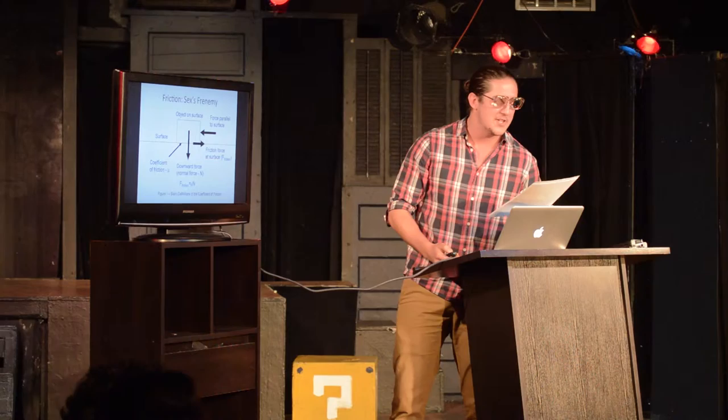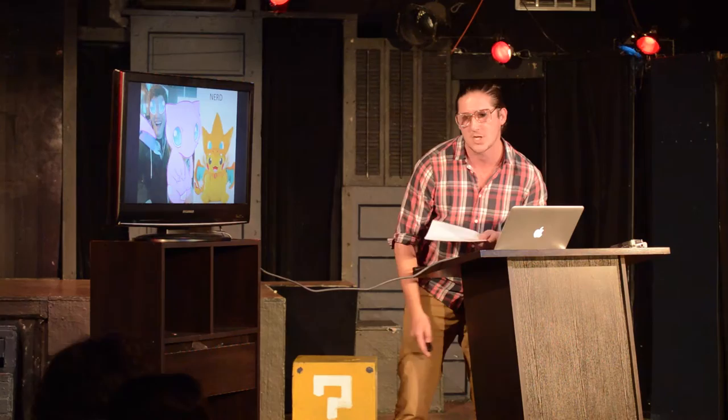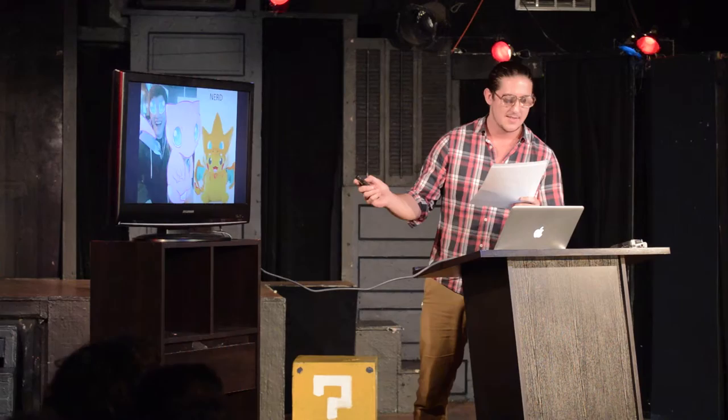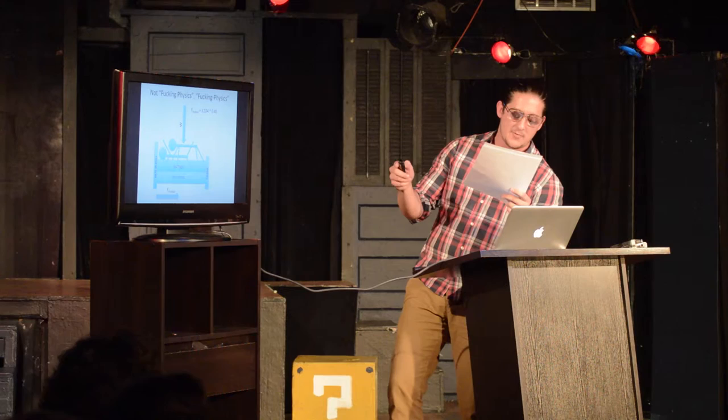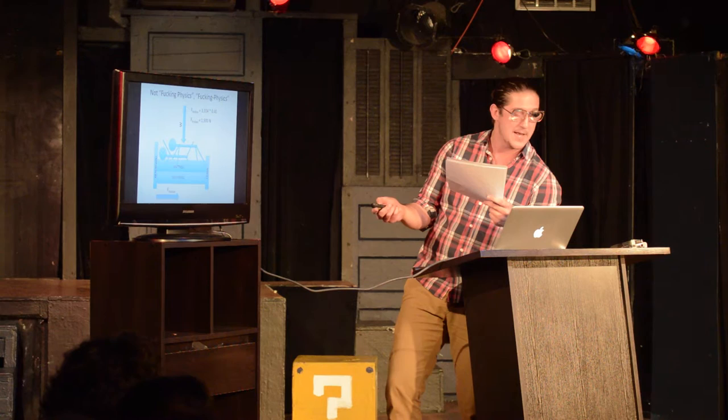The coefficient of friction is represented by the Greek letter mu — this little guy down here. And no, Adam, not the Pokémon. So, now that we know the downward force, we multiply it by 0.45, the friction coefficient for wood, and we find out that we need a horizontal force of 1,500 newtons in order to make this bed move.